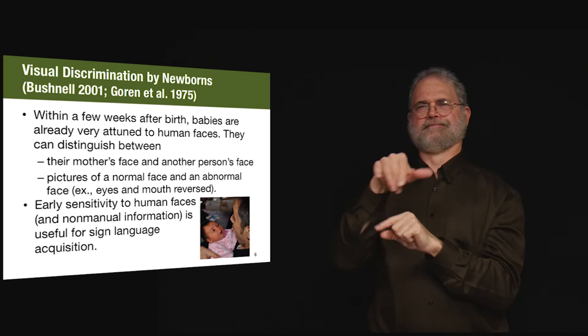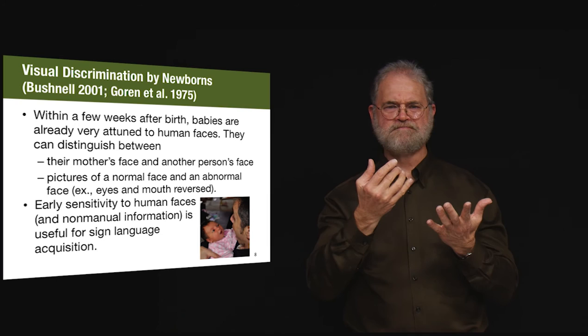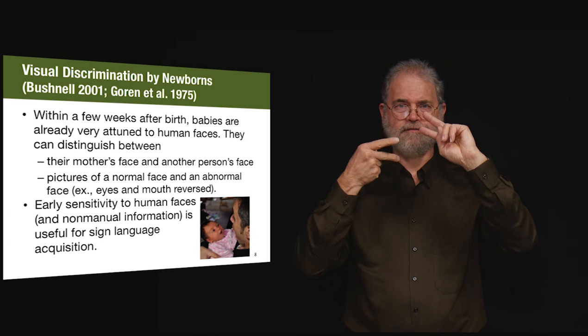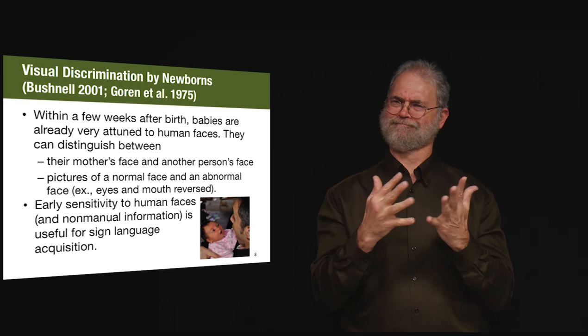If presented with two drawings, one of which shows a normal human face and the other showing something like a face, but with the eyes and mouth in opposite positions, babies can recognize the difference between these. This means that visual discrimination ability develops very early.